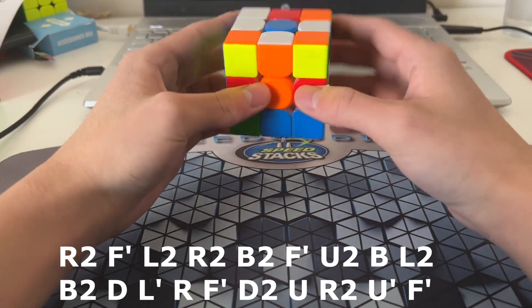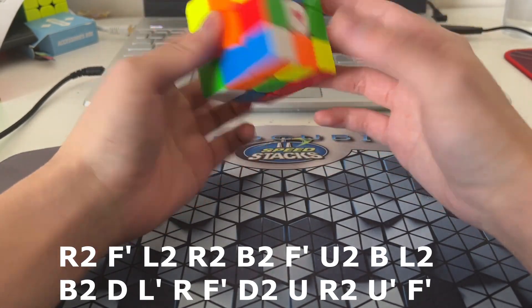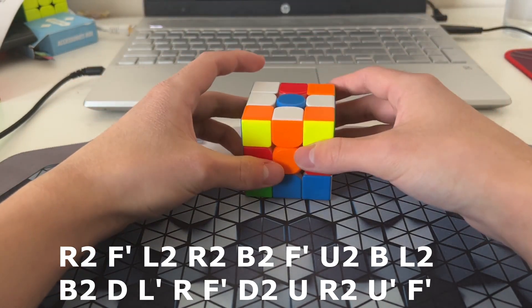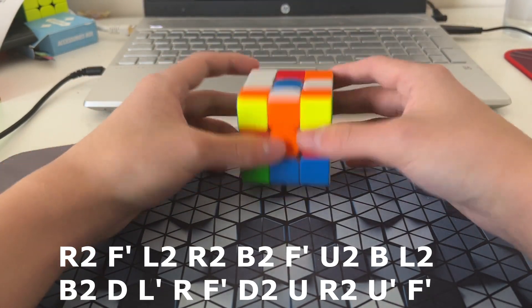This is a really nice block, because it makes an x-cross really easy. And I think I can actually... Yeah, I can double x-cross with some pseudo-slotting.